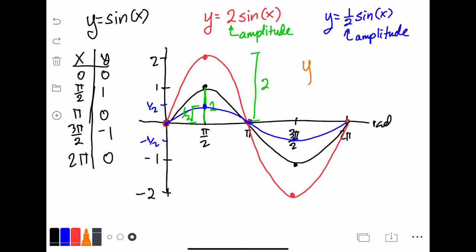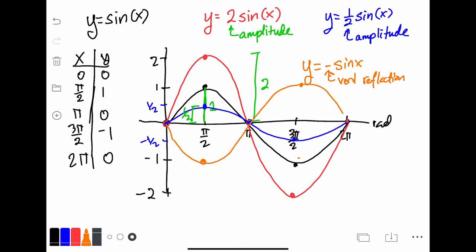Now let's say we want to graph y equals negative sine x. If you remember, this will cause a vertical reflection. Notice the amplitude is still going to be 1 — technically the amplitude is the absolute value of the number that's multiplying, because amplitude represents a height and there's no such thing as a negative height. So the amplitude is still 1. However, the negative is indicating that the graph of sine has been reflected vertically, so all of these points flip over.